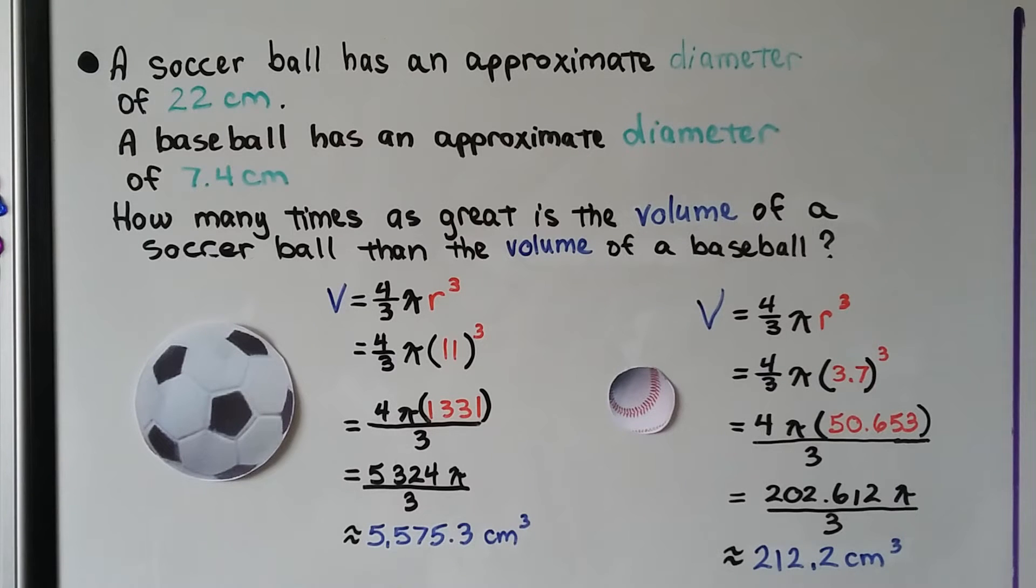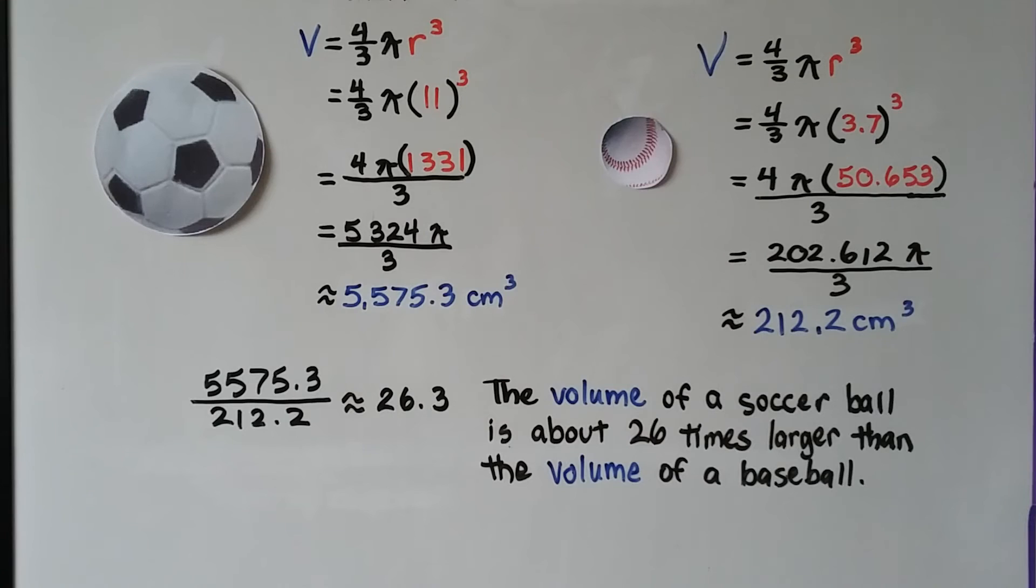Which on our calculators is approximately 212.2 centimeters cubed. So now, we need to figure out how many times greater this soccer ball is than that baseball, and we can use these two volumes. We get about 26.3. So the volume of the soccer ball is about 26 times larger than the volume of the baseball.